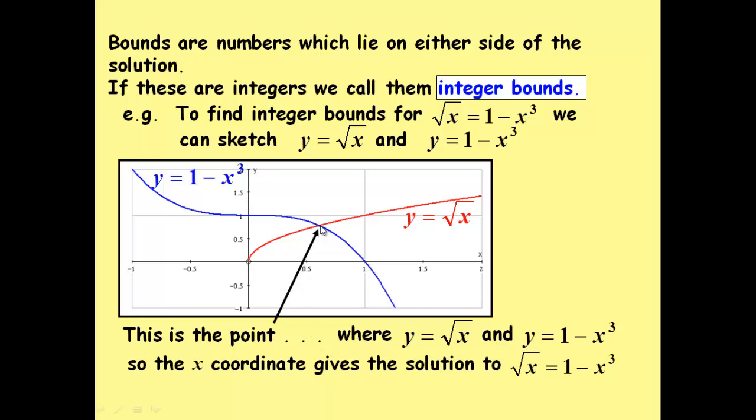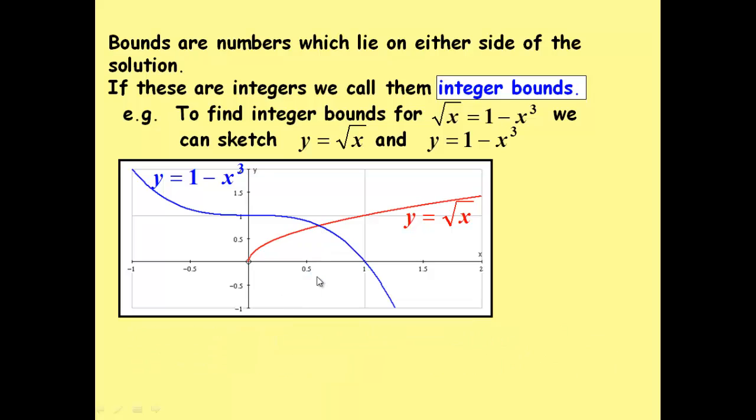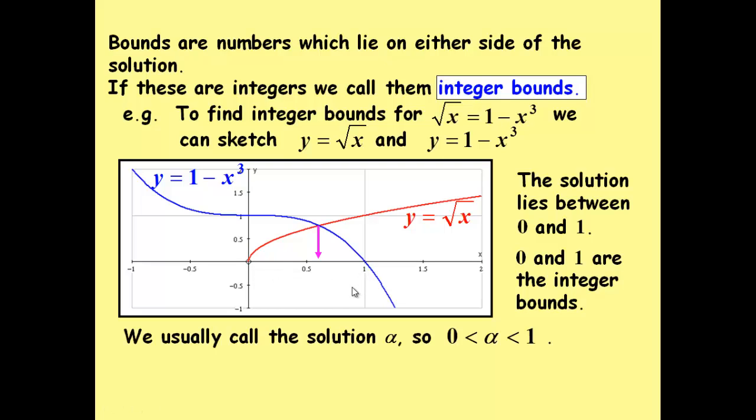And we can see that it lies between 0 and 1. So, the solution we're looking for is the value of x here that gives us that point of intersection. So, for this we can say that 0 and 1 are integer bounds. We usually call the solution alpha. So, we say that alpha lies between 0 and 1. 0 is less than alpha, which is less than 1.